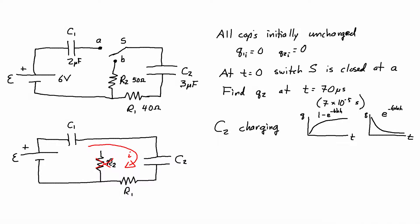So then what I want to find is q2 as a function of time because I'm charging I need to use the C2 charging equation is going to be equal to C times the EMF times 1 minus e to the negative T over RC.